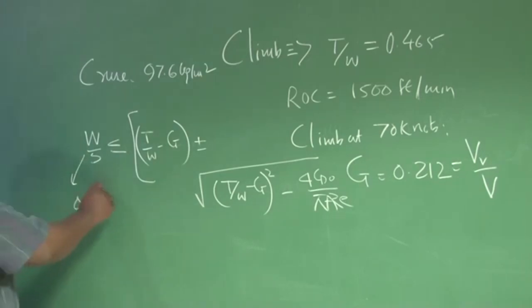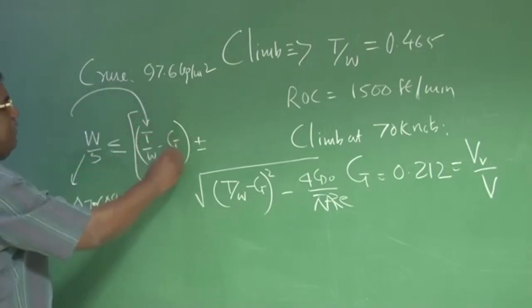If I do that, then I can find out, keeping everything same, what is the T by W requirement? And from here, if I find T by W is some value A star.